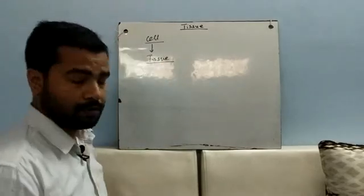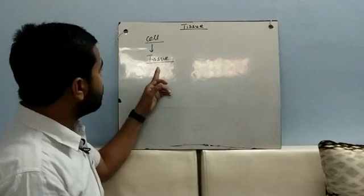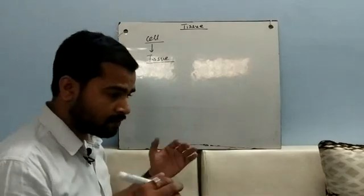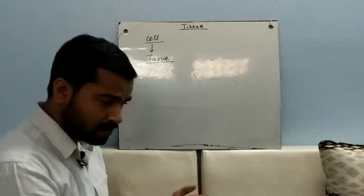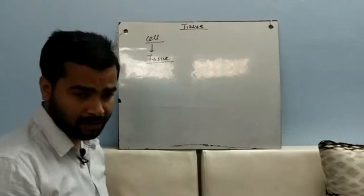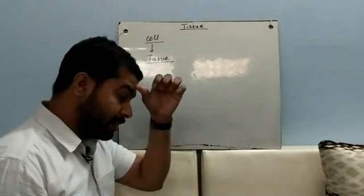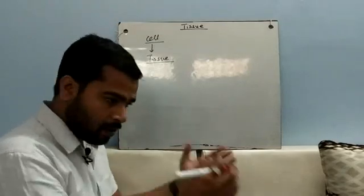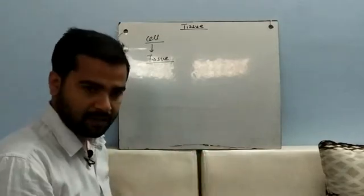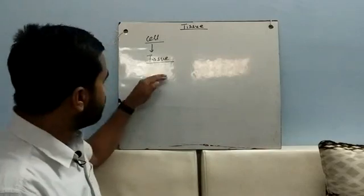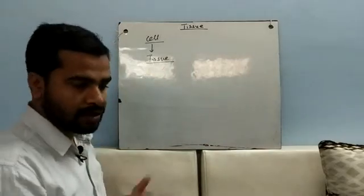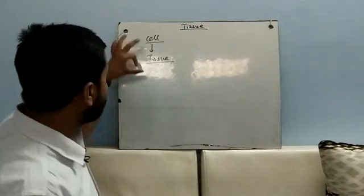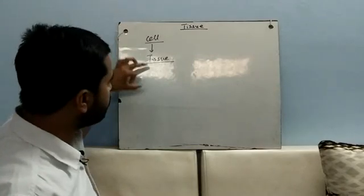So we switch from cell to the tissue level. What is tissue then? Tissue is defined as a group of cells which is similar in structure as well as similar in function. It means there are many cells which come together in a group and they perform a similar function.